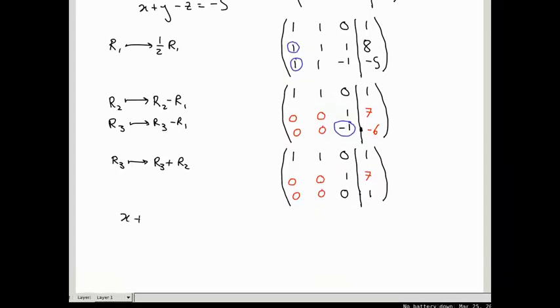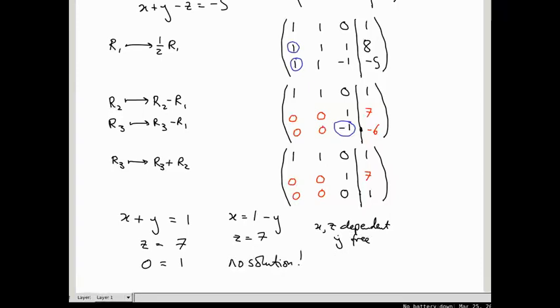So, what are these equations? They are x plus y equals 1, z equals 7, and 0 equals 1. So, if this third equation weren't there, we would have one free variable, y. We'd have x equals 1 minus y, and z equals 7. So, x and z are dependent, and y is free. But the thing is, the third equation means this is pointless because there's just no solution. So, this bit here would only be valid if there were a solution, if this was 0 equals 0. So, this is an example of this happening in the wild rather than in a kind of artificial example.